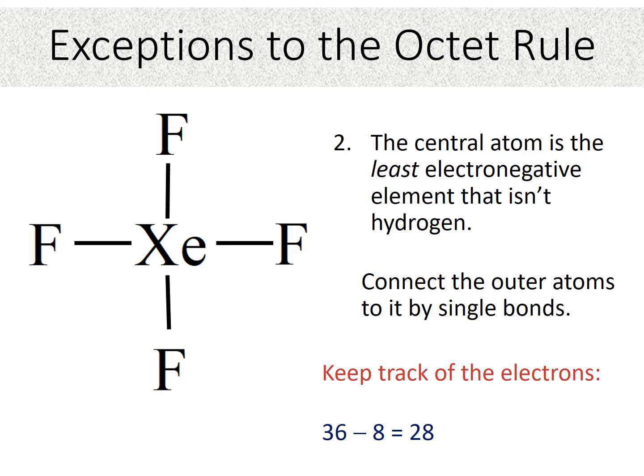The next step is that we would need to determine the central atom and the peripheral atom. So xenon would be the central atom, fluorine would be the peripheral atoms, and remember, it's usually the least electronegative element. Now, we put the central atom, connect it to the peripheral atoms with a single bond. We always go with a single bond. That is two electrons. So in this case, we've used eight electrons in bonds. So we would subtract out eight electrons. That gives us 28 electrons left.